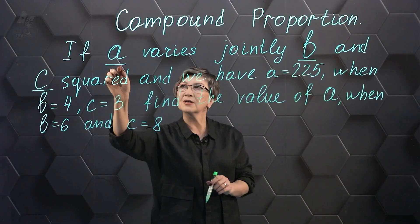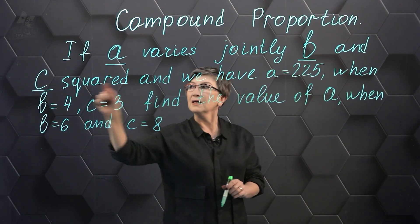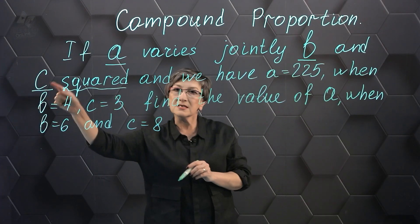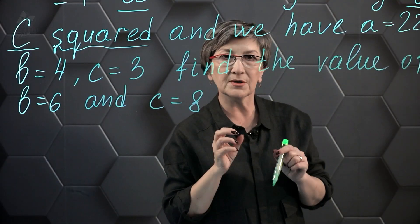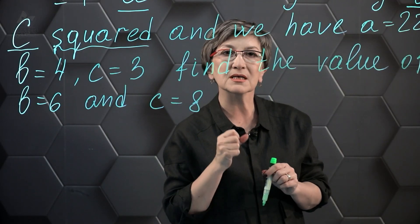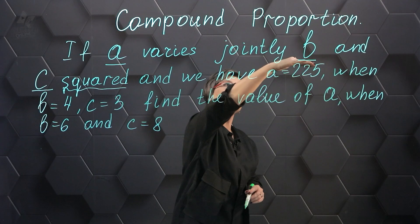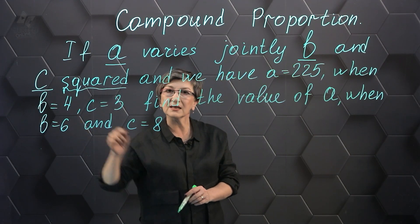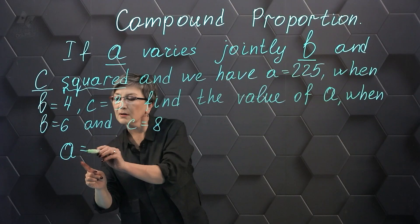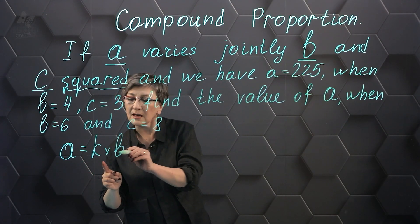In the problem condition, the value of a depends on the value of b and the square of c. In order to solve the problem, we must write down the formula of proportionality. It depends on b and the square of c. a is equal to k times b times the square of c.